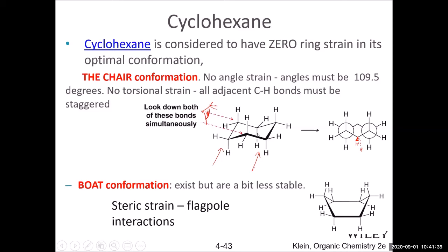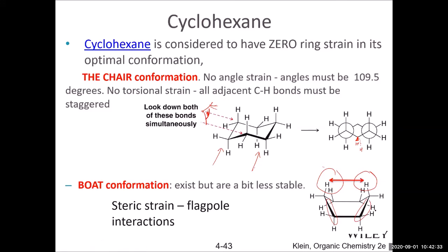If you make a bond twist, you can get a boat structure. The boat structure has some staggered positions but also some eclipsed ones, making its energy higher than the chair. The high energy in the boat mainly comes from repulsion between the two 'flagpole' hydrogens, which get too close to each other. There are also eclipsed C–C bonds and eclipsed hydrogens, contributing further to the high energy.